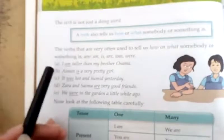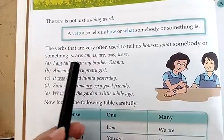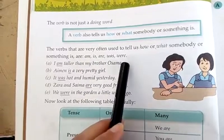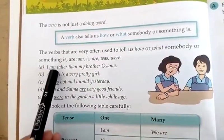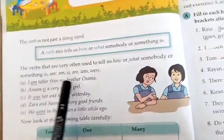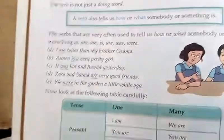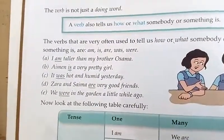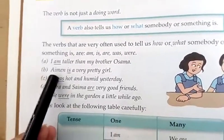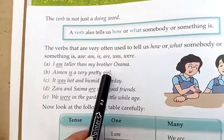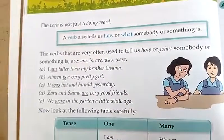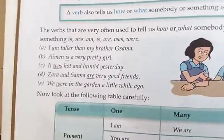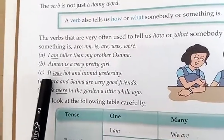اب filling the blank میں پہلے read کروں گی: 'I am taller than my brother Usama.' آئی کے ساتھ ہمیشہ am آتا ہے۔ اگلا: 'M is a very pretty girl.' کسی بھی نام کے ساتھ — جیسے میرا نام یا آپ کا نام — تو اس کے ساتھ is لگائیں گے۔